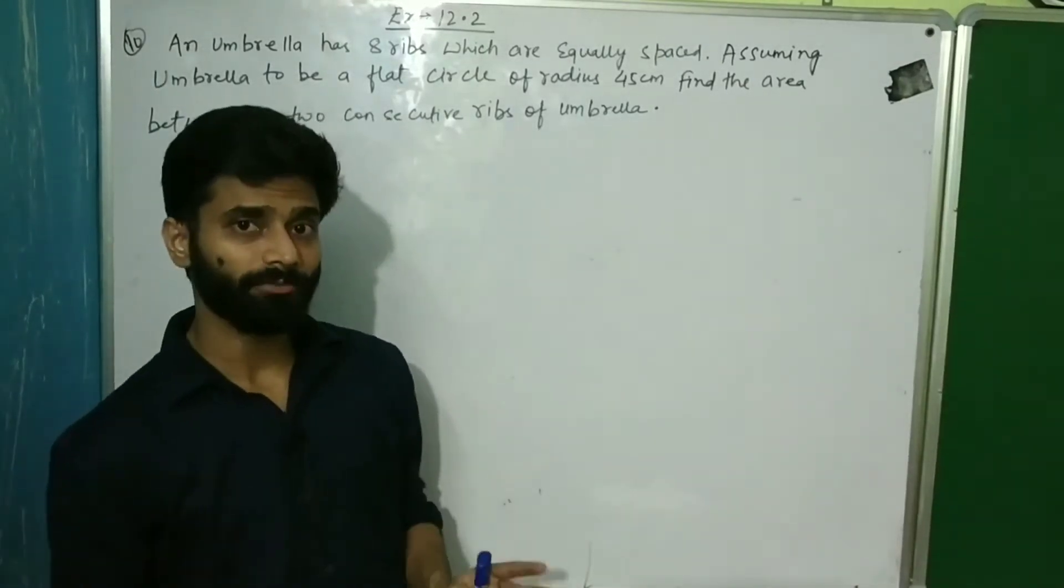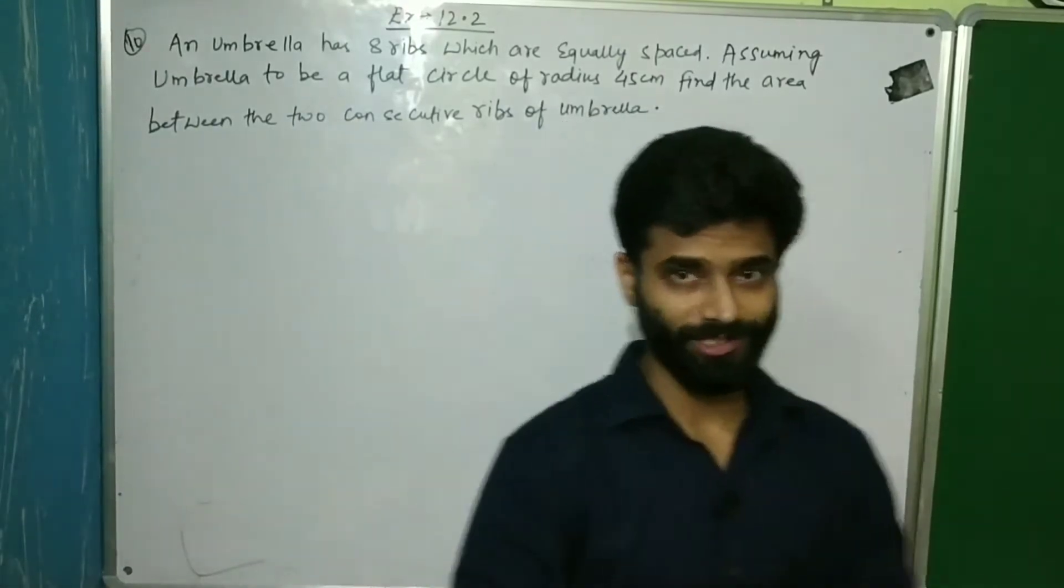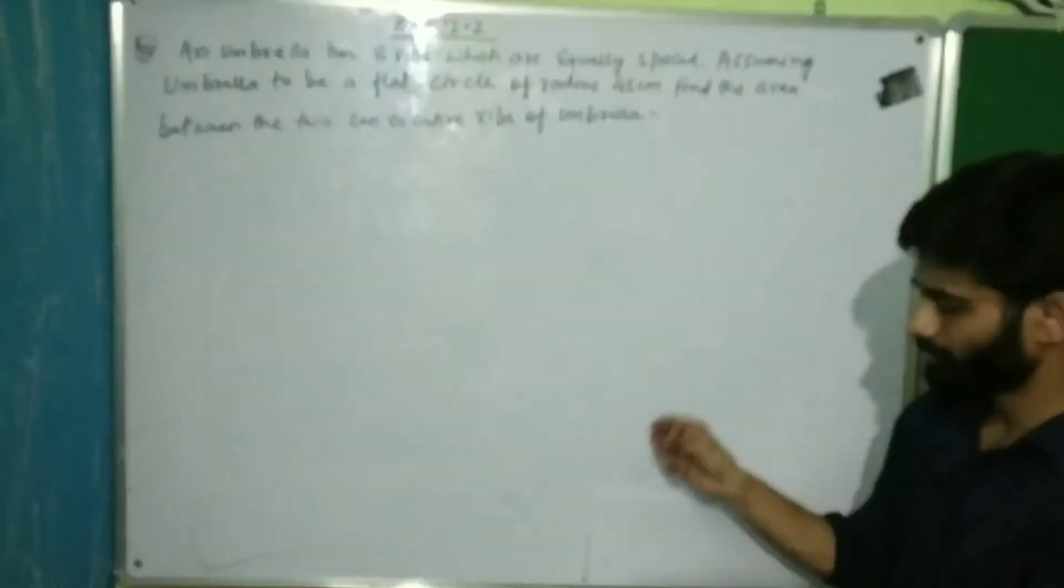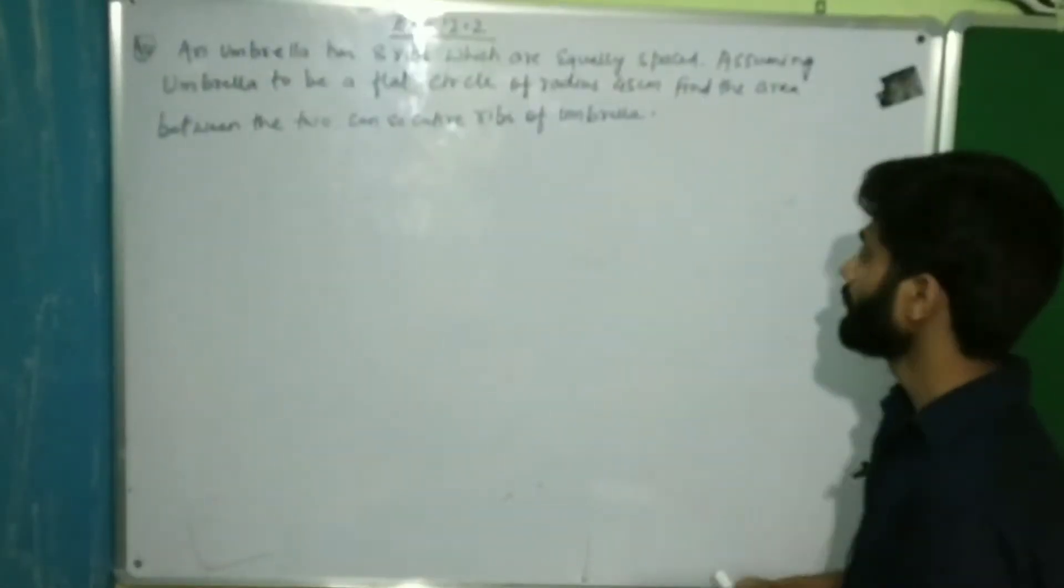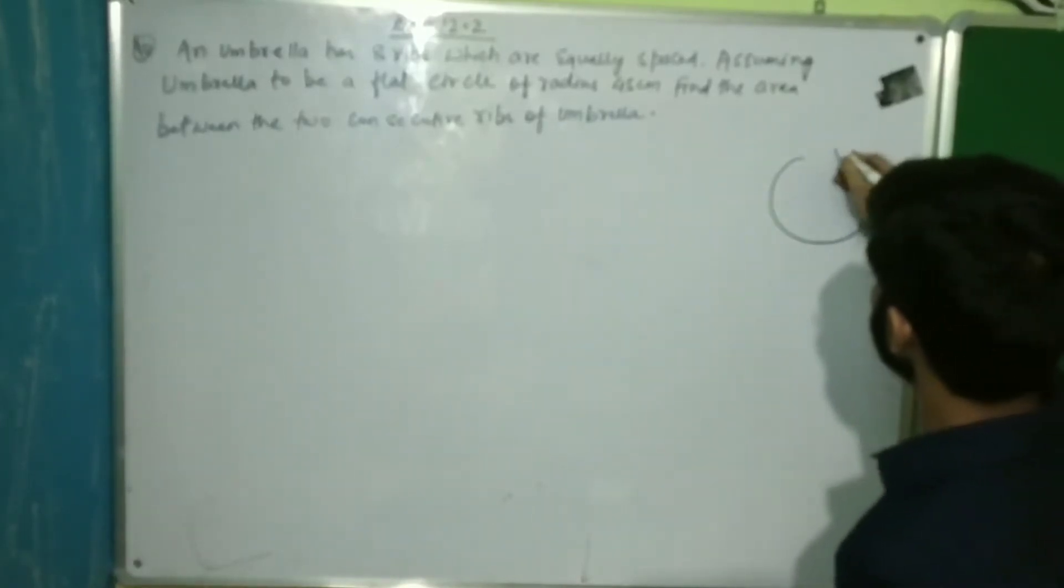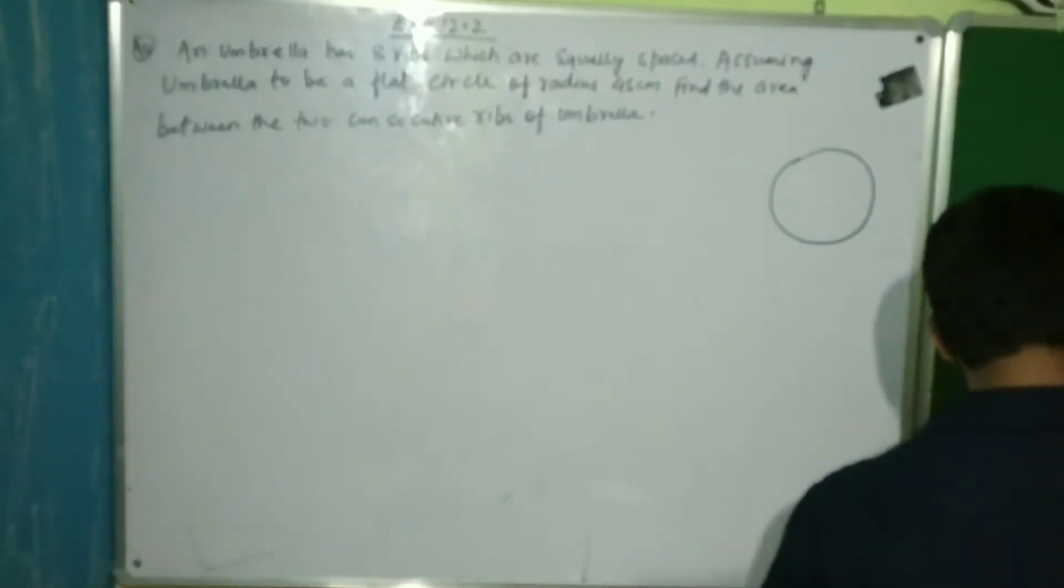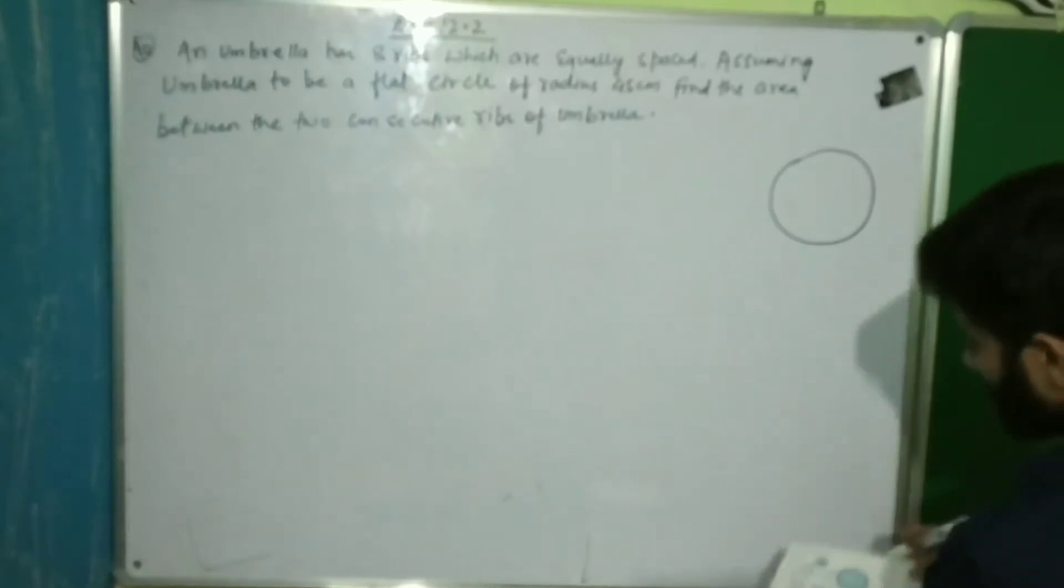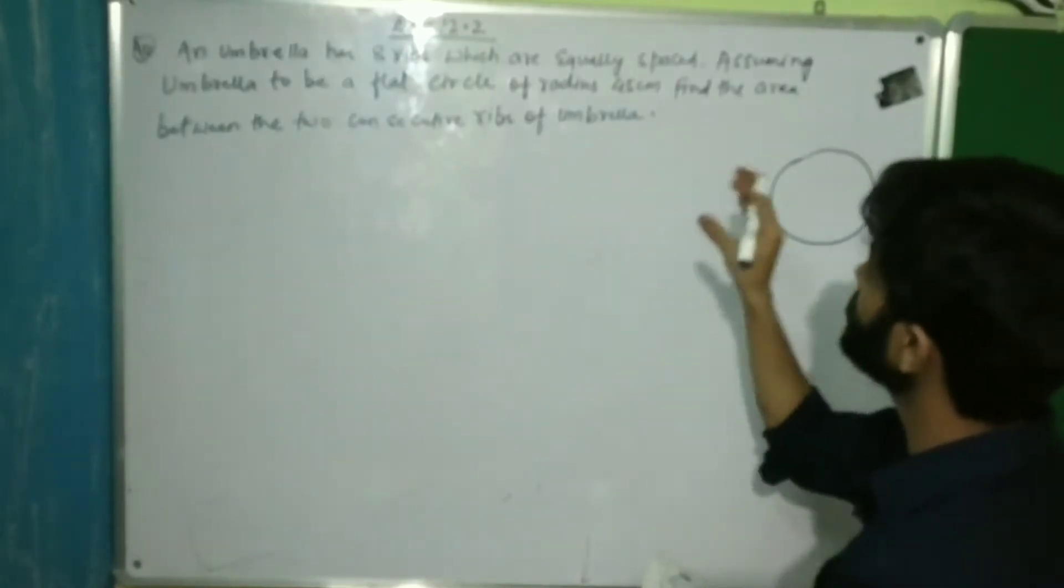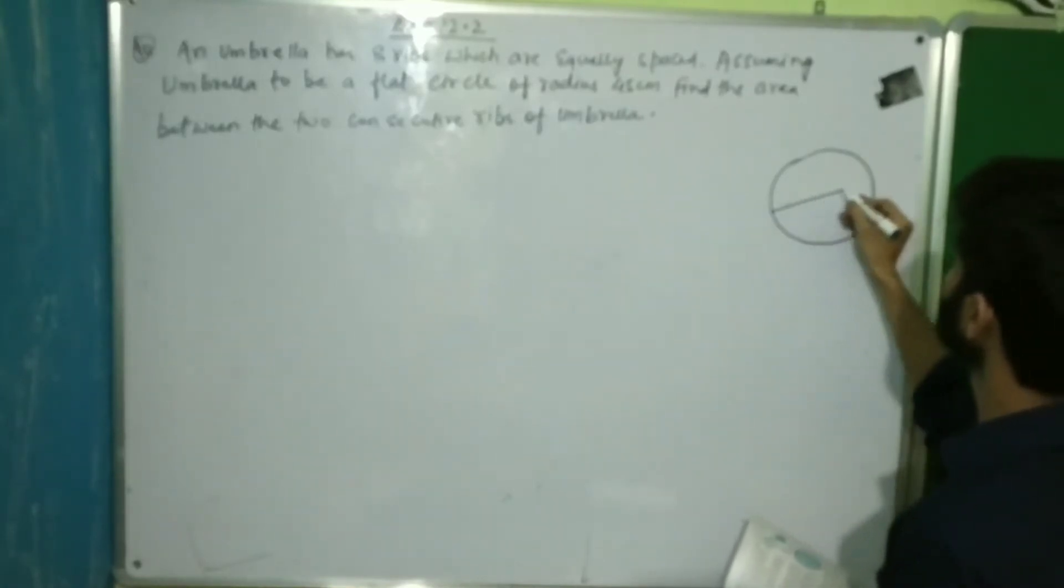Look at the umbrella with 8 ribs. Ribs, you can understand ribs as the dividing lines. But here ribs, this is a flat part. Now we are saying that the umbrella of the upper part is flat and circular. It's like this, a flat layer. The umbrella of the upper part is the same, it's like this.